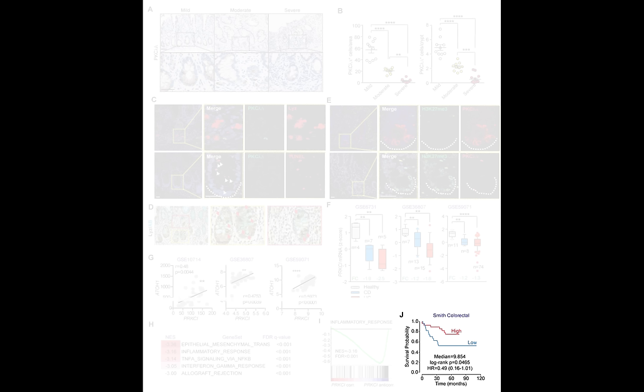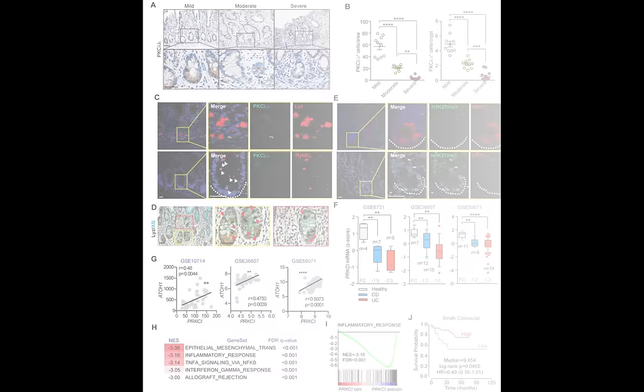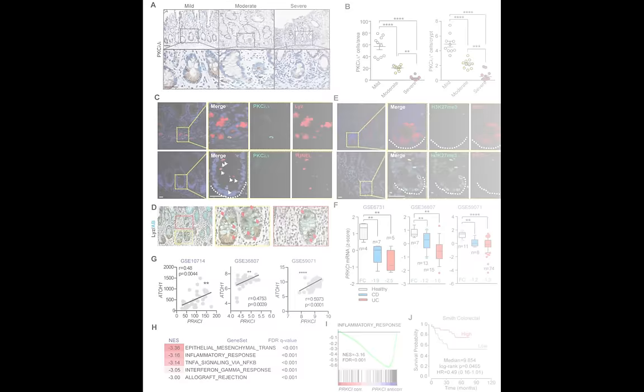Furthermore, as shown in panel J, Kaplan-Meier survival analysis of colorectal cancer patients stratified according to PKC iota expression revealed that low PKC iota transcript levels correlated with significantly worse patient survival. All these results support the unanticipated role of PKC iota as a non-cell autonomous tumor suppressor in colorectal cancer.